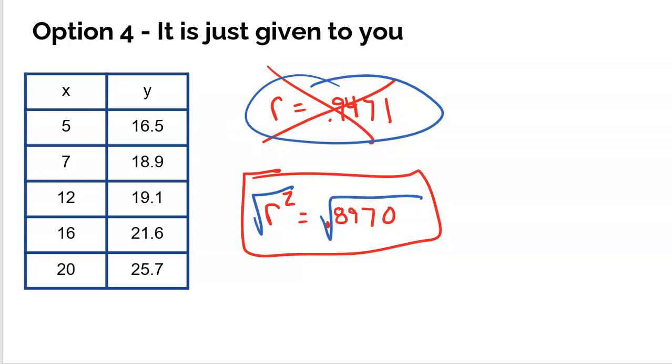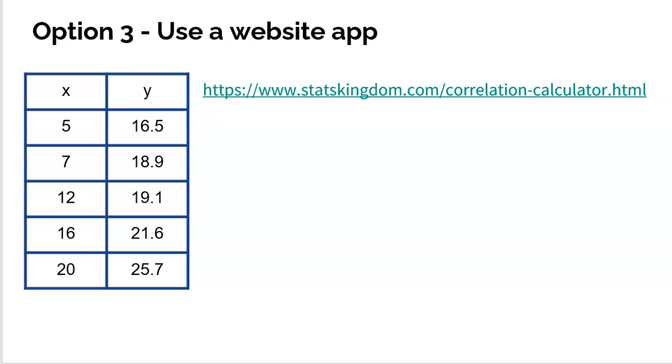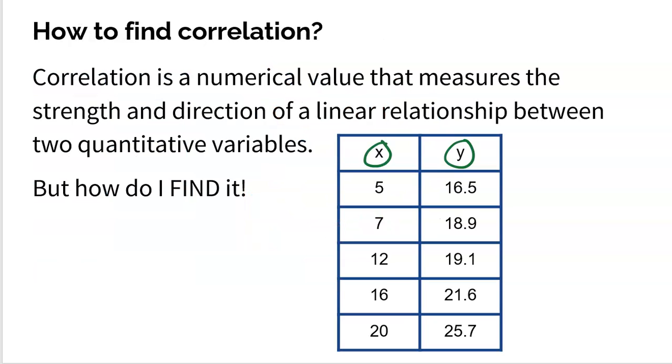Not too bad, not too bad. So again, I'm giving you four different ways. Use the formula, use your calculator, use technology, website. I love this Stats Kingdom one, it's pretty cool. Or in a perfect situation, you don't even have to waste your time at R and I'll just give you what R is. But what actually matters more than anything is that you understand what R represents. It's a numerical value that measures the strength and direction of a linear relationship between two quantitative variables. So there you go. Four different ways to get R. Hopefully you learn and hopefully you enjoy.